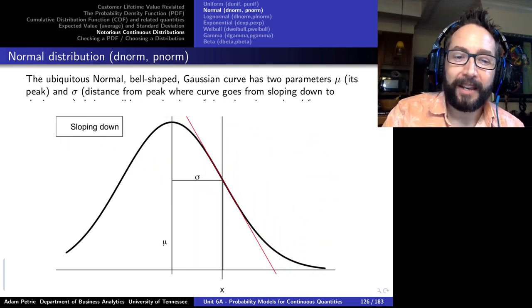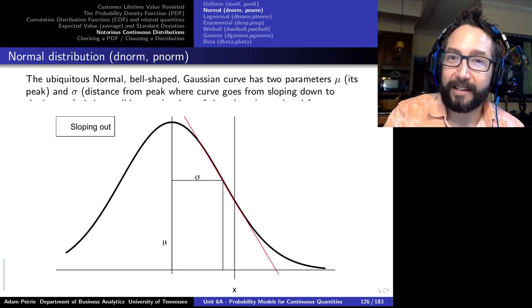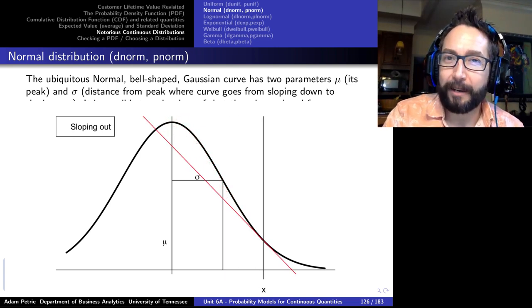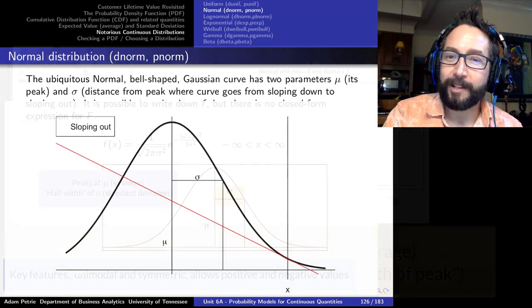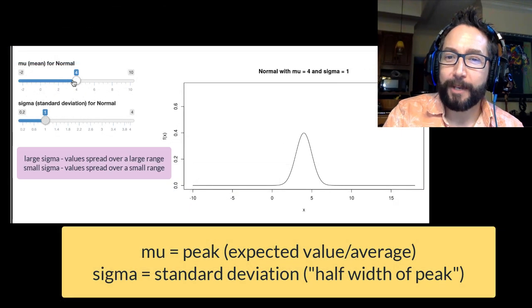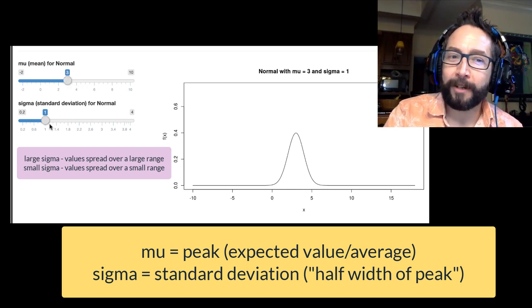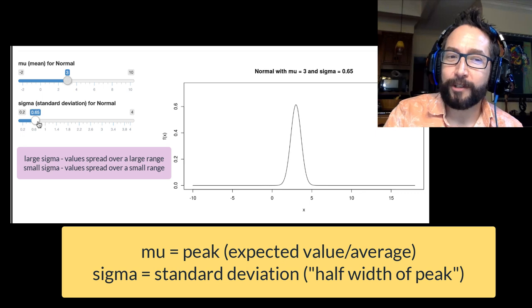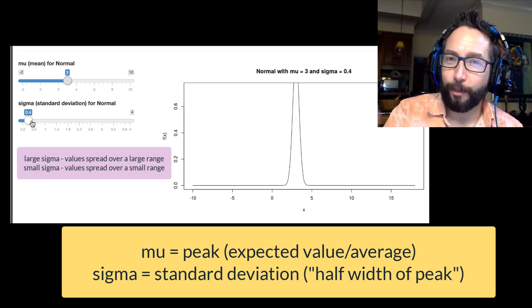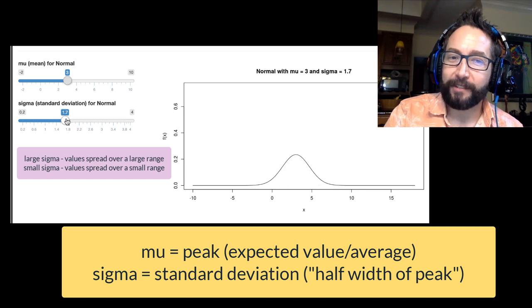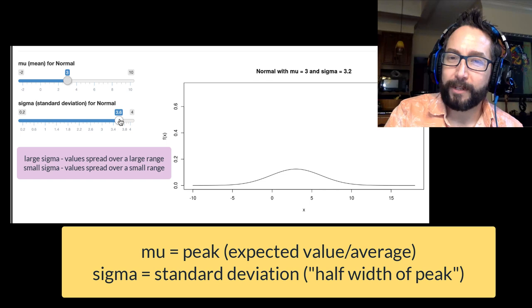Varying mu and sigma allows you to capture many different symmetric bell-type shapes. On the Shiny app, tweaking the mu parameter just shifts the peak left and right, keeping the same width. Changing the standard deviation makes it skinnier — values are more concentrated close to the average — or wider, with values more spread out. A really large standard deviation spreads the values over a very big range of x.